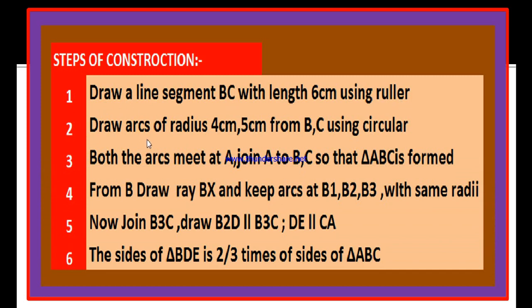And second point: draw arcs of radius 4 cm, 5 cm from B and C using circular respectively. Third point: both the arcs meet at point A. Join A to B and A to C so that the triangle ABC is formed. Point 4: from point B, draw a ray BX and keep arcs at B1, B2 and B3 with same radii.